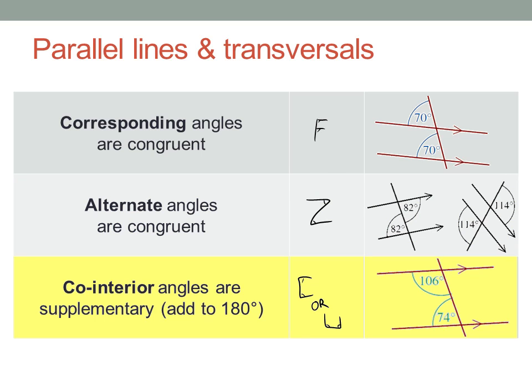Finally, Co-Interior Angles are supplementary — they add to 180 degrees. Have a look at the diagram here. Can you see the Co-Interior Angles on the same side of the transversal? Here would be another pair of Co-Interior Angles. You're looking for a C or a U shape, and you can use either a C or a U for the symbol. Co-Interior Angles are supplementary.